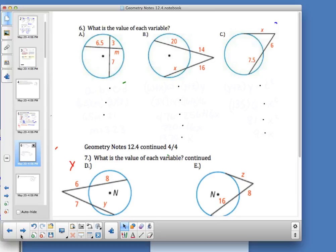This one, two chords are meeting in the circle. So I have a relationship that the product of the two parts of each chord are equal to each other. So I know 6.5 times M is equal to 3 times 7. That's the relationship I'm setting up. And after I do the setup, I solve using algebra.